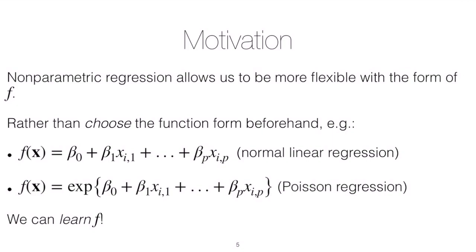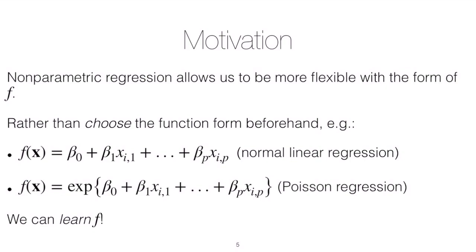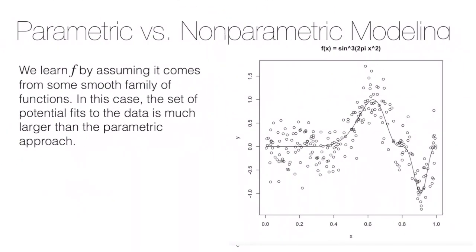In non-parametric regression, instead of choosing f beforehand and then estimating the parameters that appear in f, we try to learn f — to be much more flexible in what f is. We learn f by assuming it comes from some smooth family of functions, putting some restrictions on f by assuming it has many higher-order derivatives, so we're not choosing functions that are spiky in certain ways.